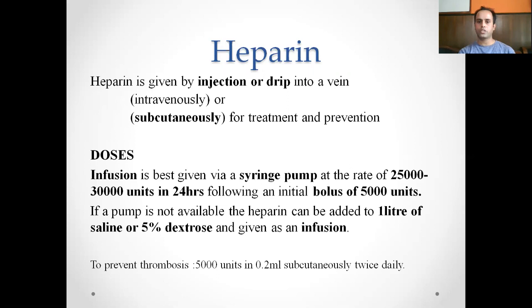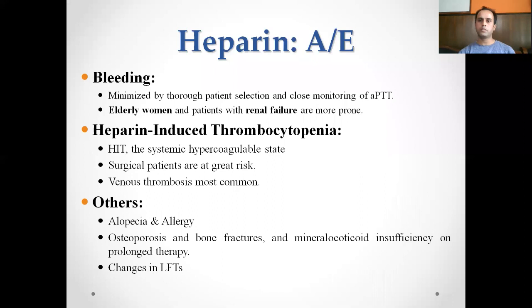Heparin is given by injection into a vein or subcutaneously. It is given as an infusion by syringe pump at 25,000 to 30,000 units over 24 hours following an initial bolus dose of 5,000 units. If a syringe pump is not available, it can be added to a liter of saline or 5% dextrose and given as infusion. For thrombosis prevention, heparin is given 5,000 units in 0.2 mL subcutaneously twice daily.